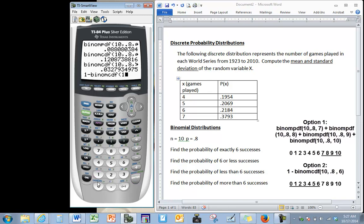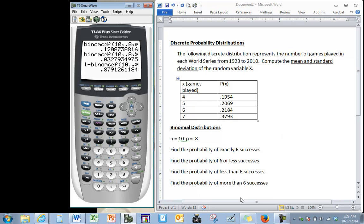So once again you enter in the total number of trials, 10, comma, your probability, .8, comma. Here we're looking for the probability of more than six successes, so you really want seven, eight, nine, and ten. The binomial cdf, whatever x value you enter, it calculates that probability and everything below it, so that means we want six. And one minus that statement allows us to have the probability of more than six.